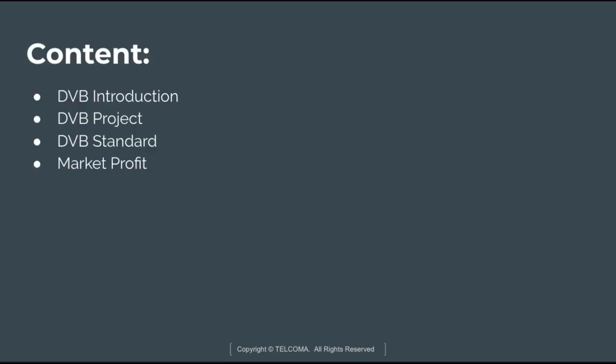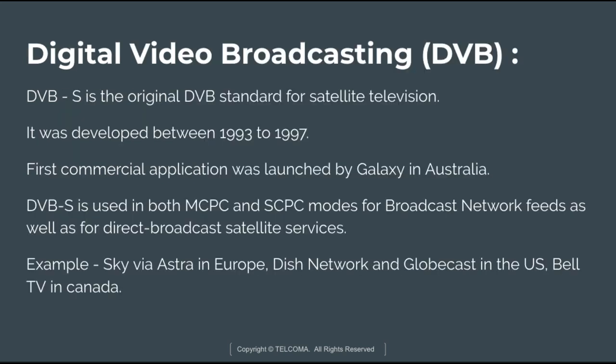In this chapter we will discuss the DVB introduction, the DVB project, DVB standards, and the market profit. DVB-S is the original DVB standard for satellite television, which enables digitally broadcast satellite delivery of television to the public. It was developed between 1993 and 1997, and the first commercial application was launched by Galaxy in Australia.